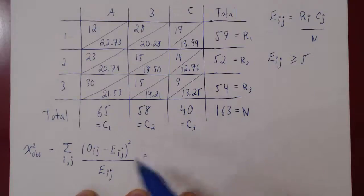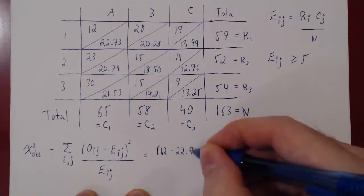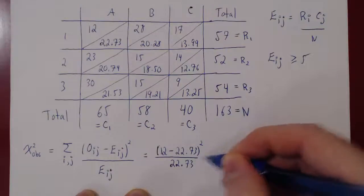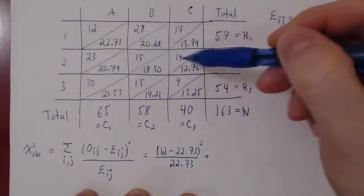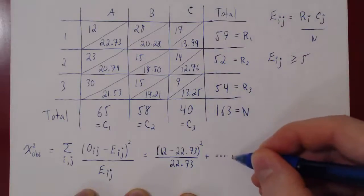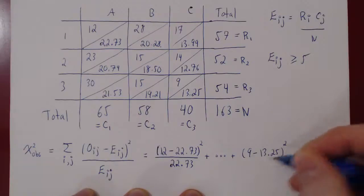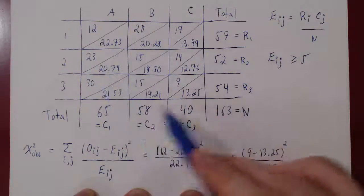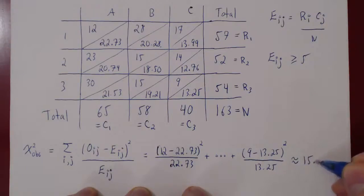Writing out the first and last terms: the first term is (12 − 22.73)² / 22.73, plus (28 − 20.28)² / 20.28, and so on for each cell, up to the last term (9 − 13.25)² / 13.25. Adding up all nine values, we find an observed chi-squared value of approximately 15.30.